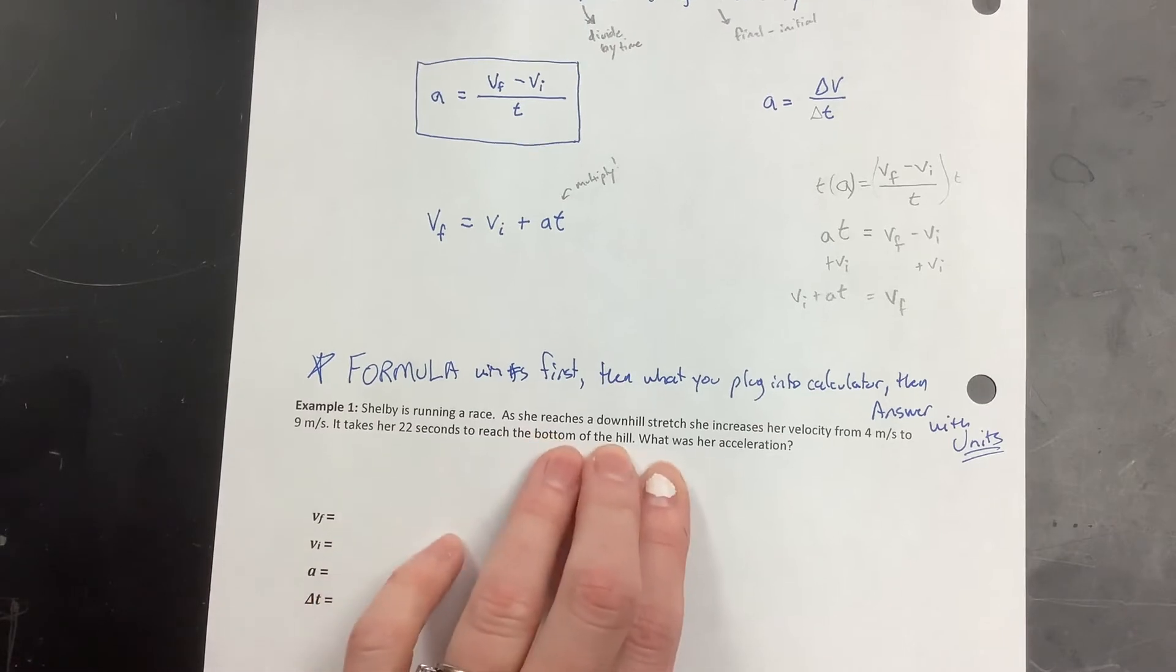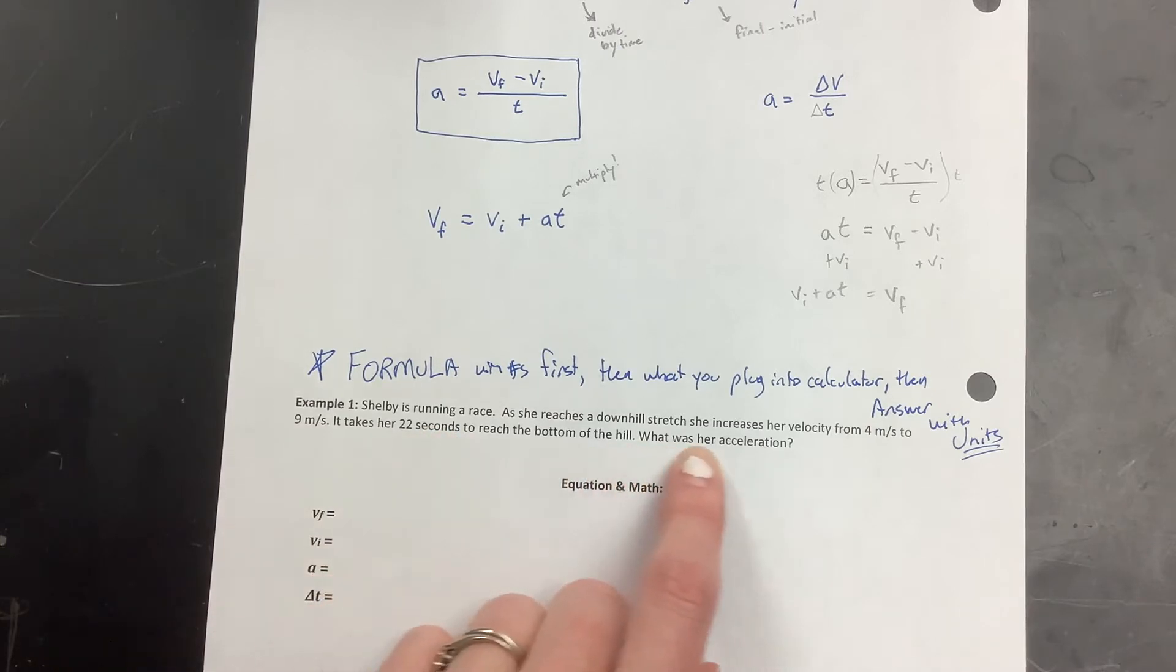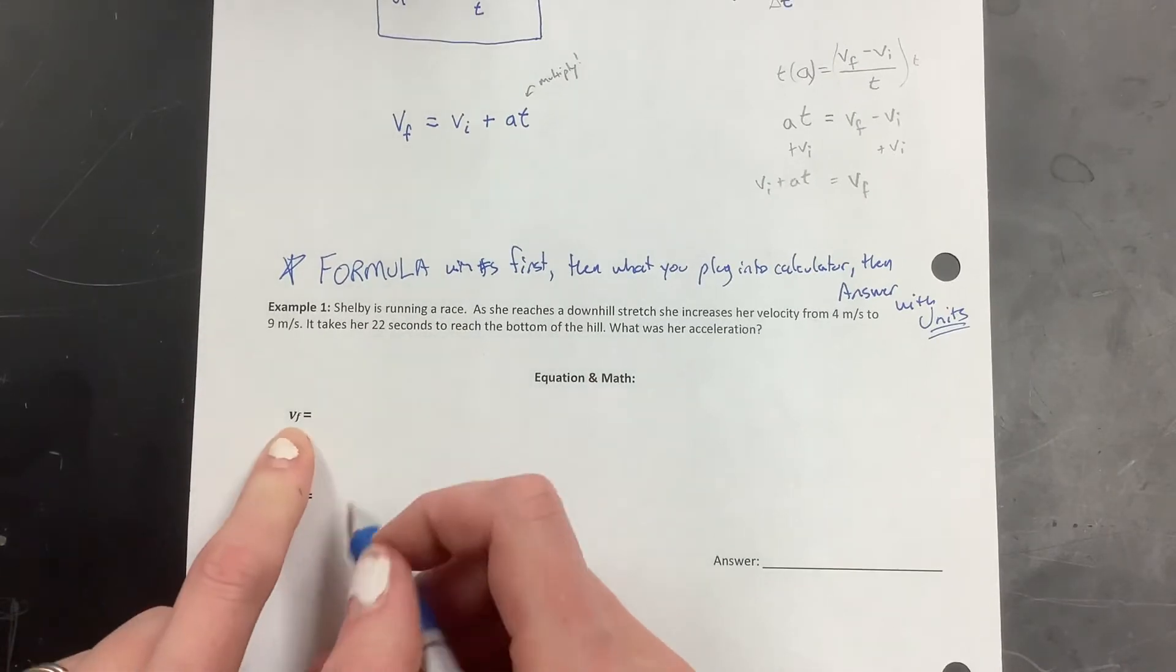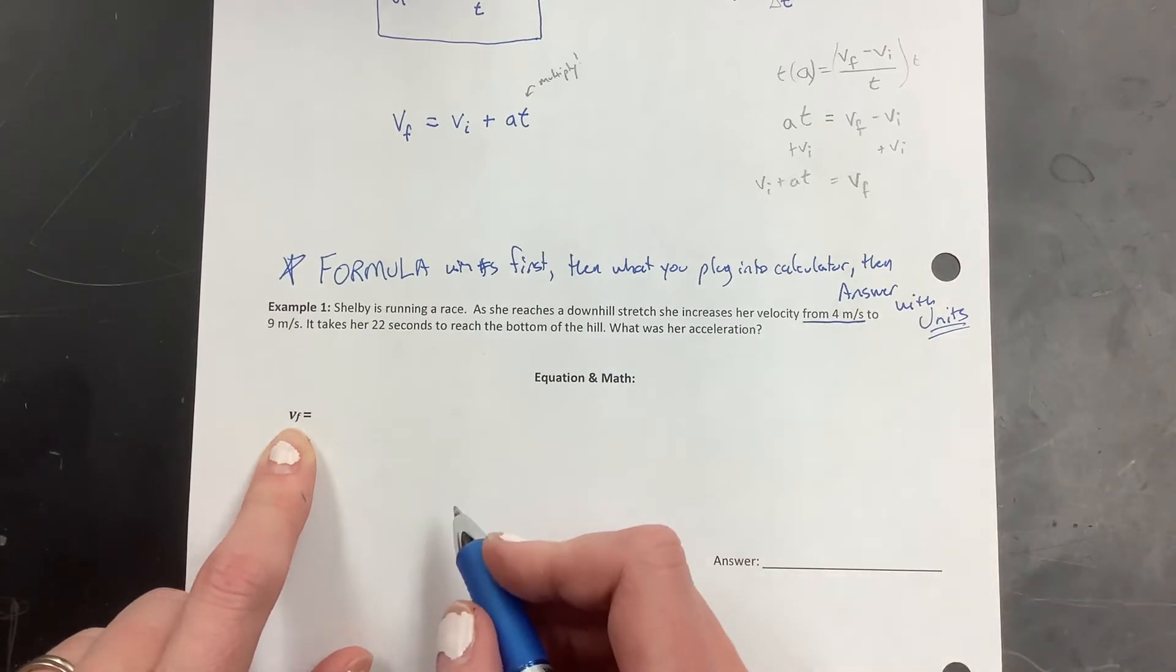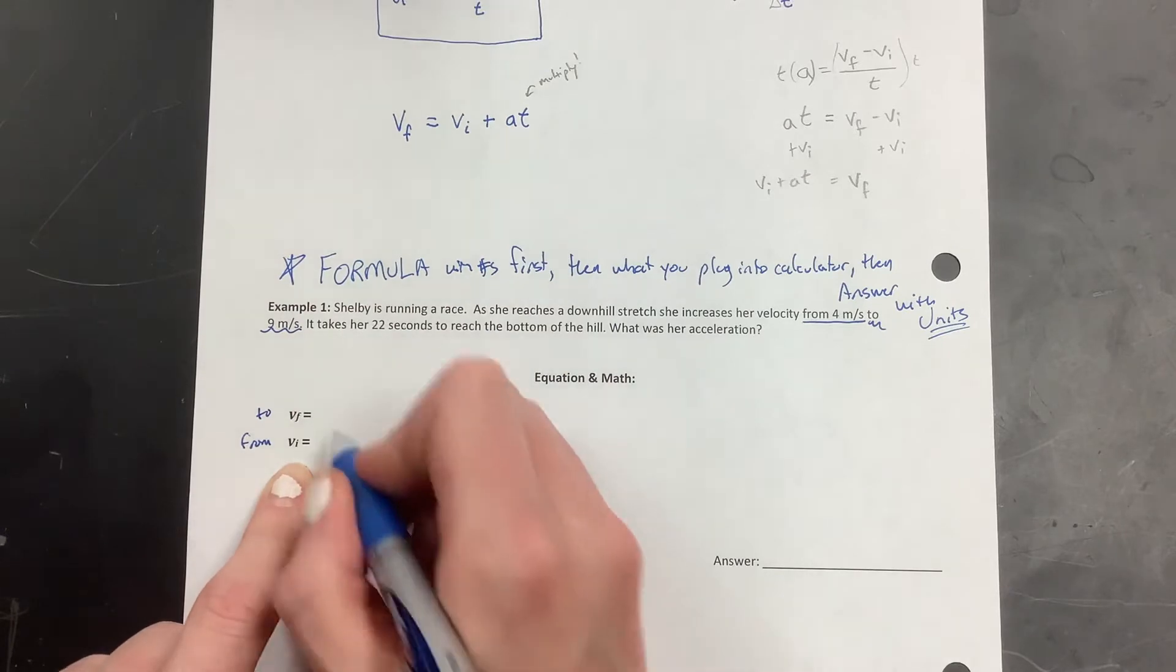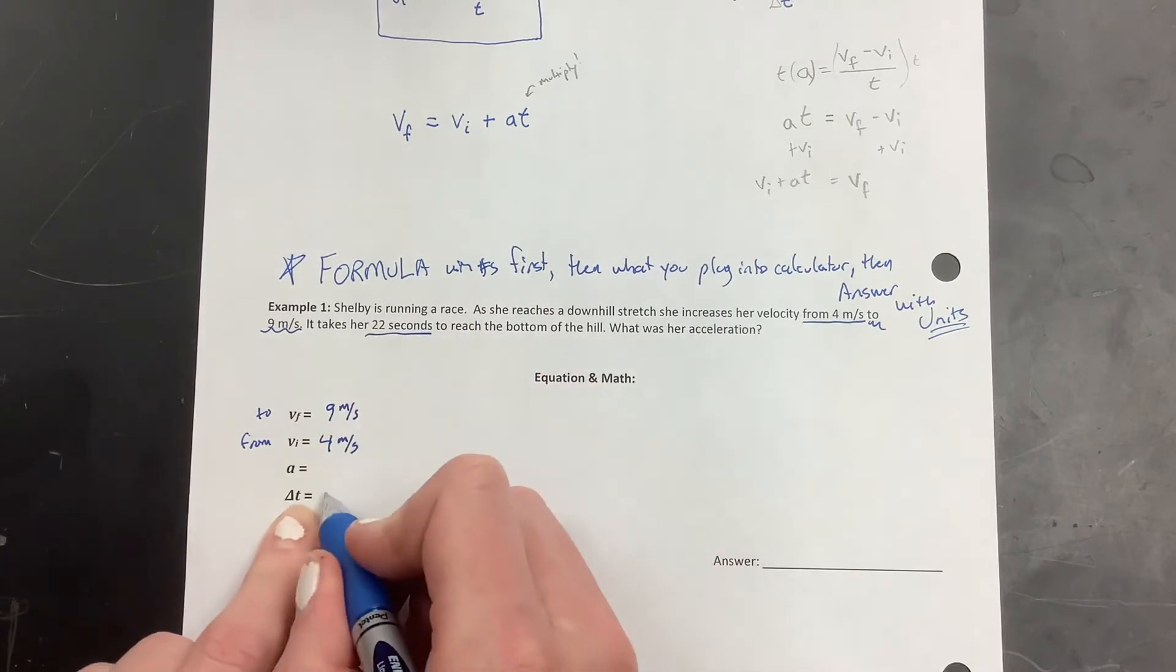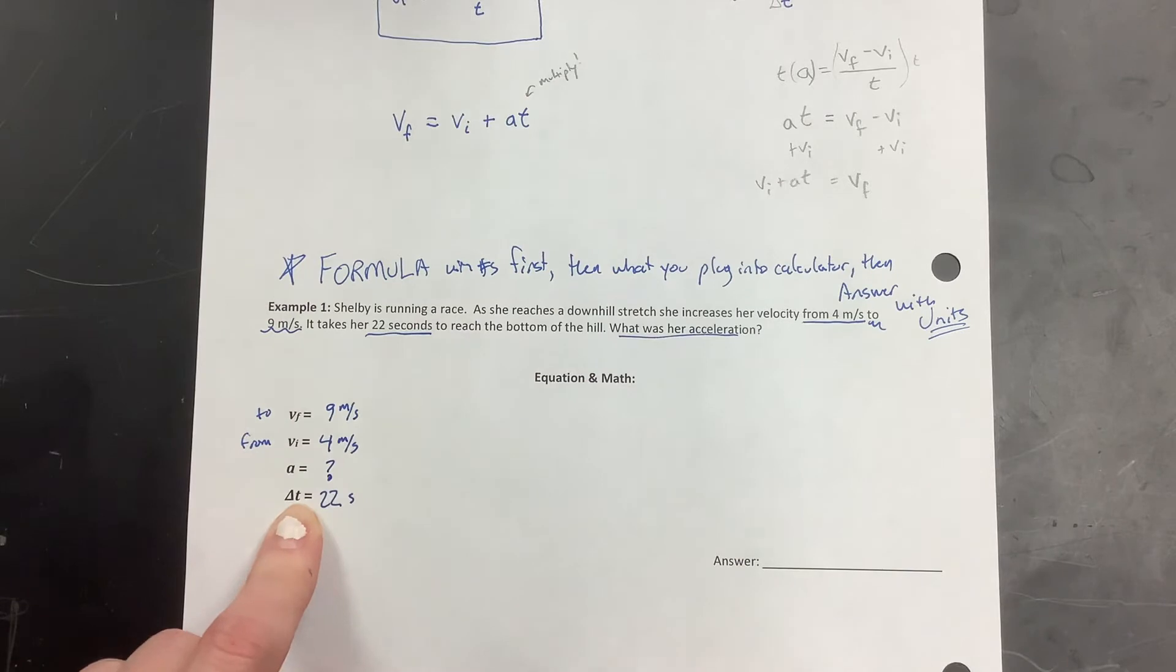Shelby's running a race. If she reaches a downhill stretch, she increases her velocity from 4 meters per second to 9 meters per second. And it takes her 22 seconds to reach the bottom of the hill. What was her acceleration? So we have some handy things to help us here. So from 4 meters per second, that's our initial. That tells us that's what she's starting at. And then to 9 meters per second, that tells us that's what she's ending up at. 22 seconds, that's our time. So we'll put that down here, 22 seconds. What is her acceleration? I'm going to put a question mark there because that's what it's asking me to find.